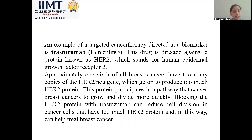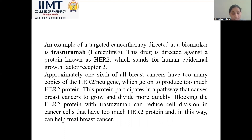An example of targeted cancer chemotherapy directed at a biomarker is trastuzumab. This drug is directed against the protein known as HER2 — human epidermal growth factor receptor 2. Approximately one-sixth of all breast cancers contain a copy of HER2, which goes on to produce too much HER2 protein. This protein participates in a pathway that causes breast cancer to proliferate more quickly. If you block the HER2 protein using trastuzumab, cell proliferation will be reduced in the cancer cells.